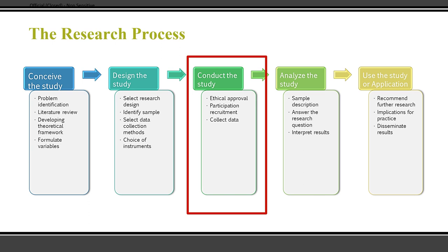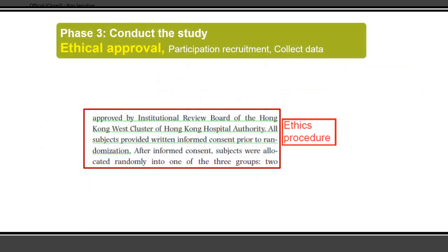Next we look at how you conduct the research. First, you need ethical approval. Ethics is concerned with rules and principles of human behavior — it guides you on what you can and must not do in research, especially when recruiting participants or collecting data. There are three basic principles related to ethical approval.